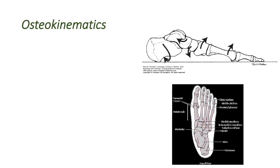There are two important topics: supination twist, pronation twist, and metatarsal break. Supination twist occurs during weight bearing. When weight bearing, the foot tries to flatten on the ground — there will be pronation or eversion of the subtalar joint, causing the lateral aspect of the foot to raise off the ground while the medial forefoot is pressed on the ground, resulting in unequal contact. Therefore the supination twist occurs.